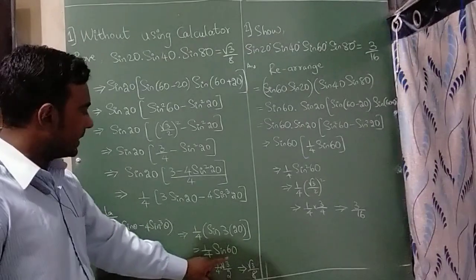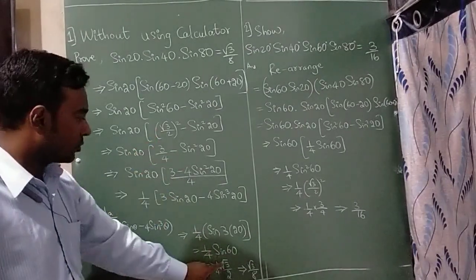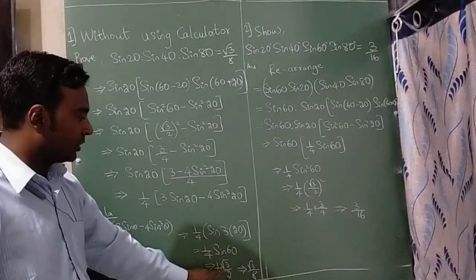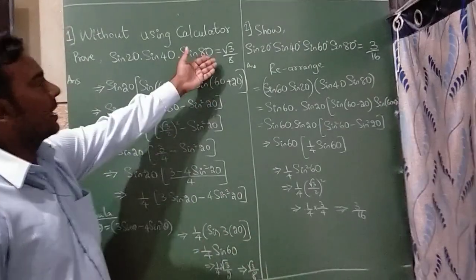So 3 times 20 is 60, sin 60 is again root 3 by 2, so I have written here, so 1 into root 3 is root 3, 4 times 2 is 8, this is the answer.